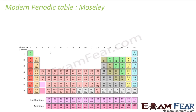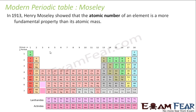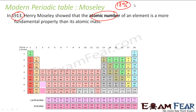Now I will study the modern periodic table based on Moseley. This guy Moseley, in 1913, showed that atomic number is a better fundamental property than atomic mass. The atomic mass was found by stoichiometric equations, by chemical reactions.